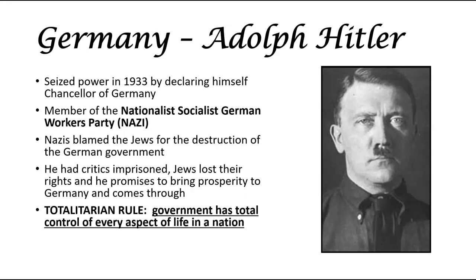The Jews are going to lose their rights. He promises to bring prosperity to Germany and actually comes through using a lot of the techniques that FDR does — a lot of stimulus spending. The Nazis are the ones that build the autobahn, the highways in Germany, so that they can move military equipment. He practices totalitarian rule, where the government has total control of every aspect of life in a nation. He calls himself the Fuhrer and essentially has complete control of every decision in Germany.